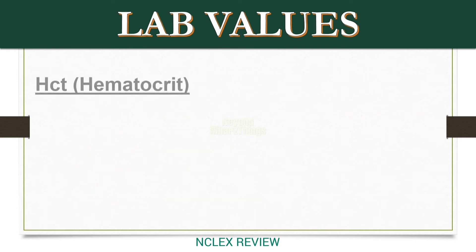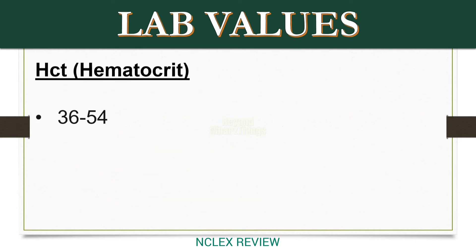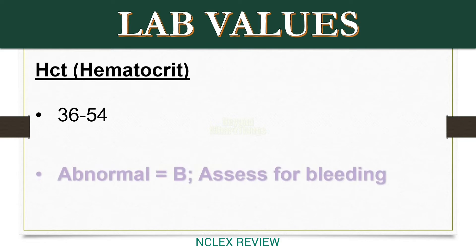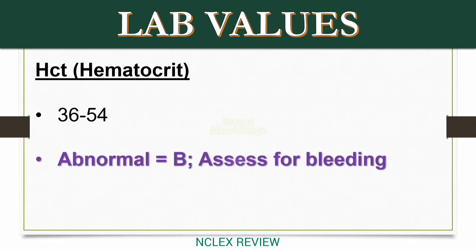HCT — Hematocrit. Normal range: 36 to 54. Abnormal equals B. Assess for bleeding.